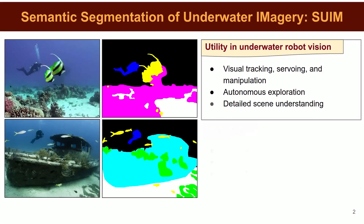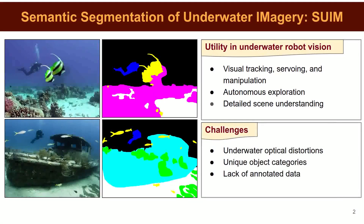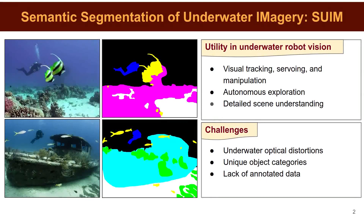However, robust underwater image segmentation is challenging, mostly due to a host of underwater optical distortions that cause noisy visual data. The uniqueness of image content and object categories are also among the reasons why existing terrestrial datasets and standard models are not directly applicable in underwater robot vision.